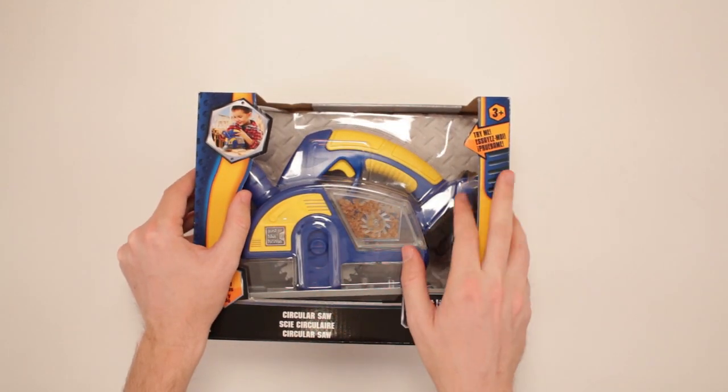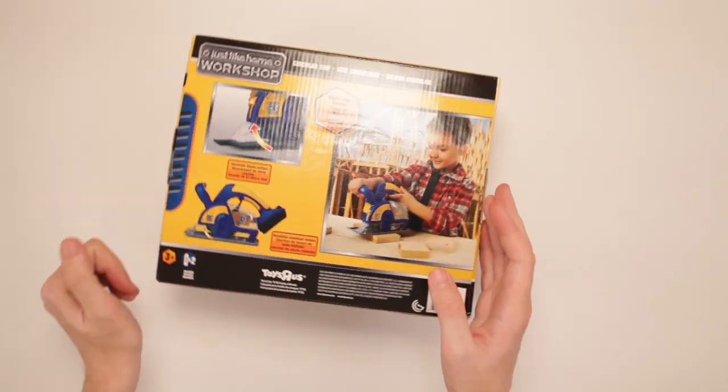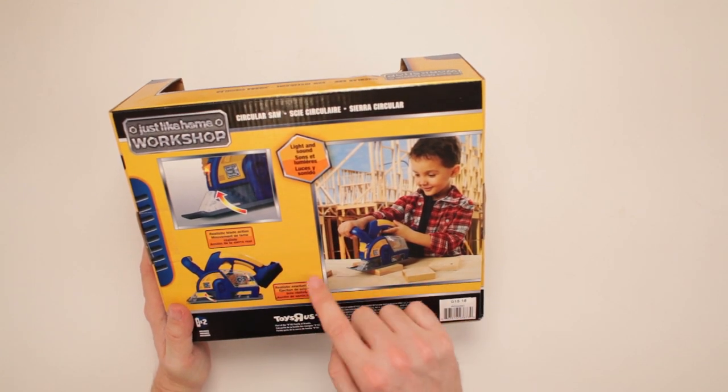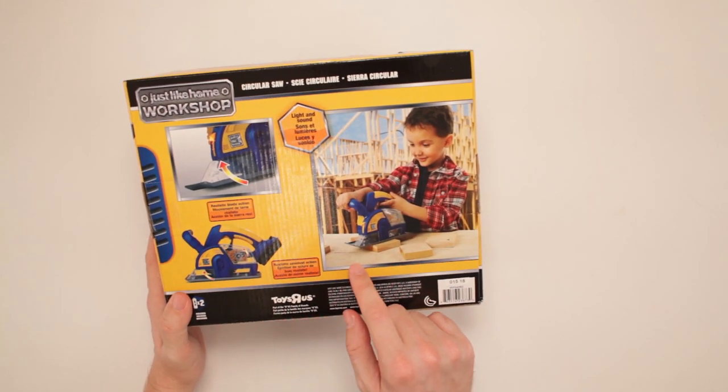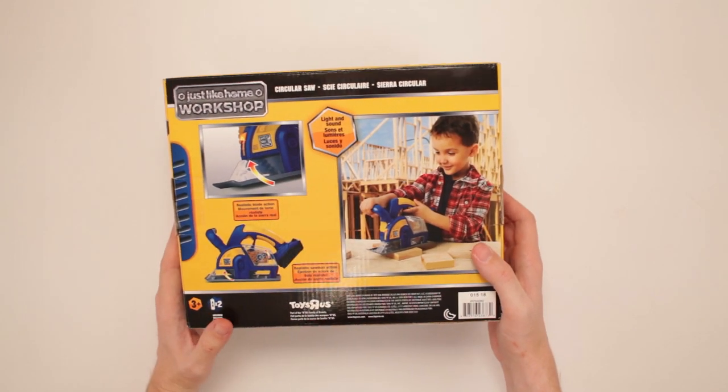Children with saws, that's a good way to go. Get them started young. That way all their fingers can grow back. And then there's also realistic blade action and realistic sawdust action. Sprays right in your eyes.